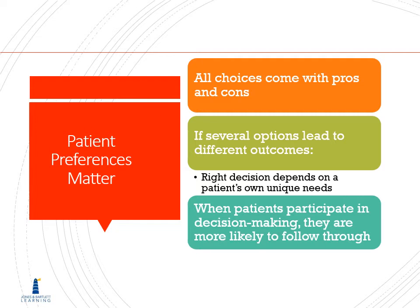All choices come with pros and cons. While we might recommend an implant, if it's too expensive, they're probably not going to do it. If several options lead to different outcomes, we want the patient to make a decision based on what will work for them and what they're willing to do. When patients participate in the decision making, they're more likely to follow through. If you say floss with string and they're willing to use floss picks, and you say no — they go home and never floss because you told them not to do the thing they were willing to do. You have to give them something they are willing to do.